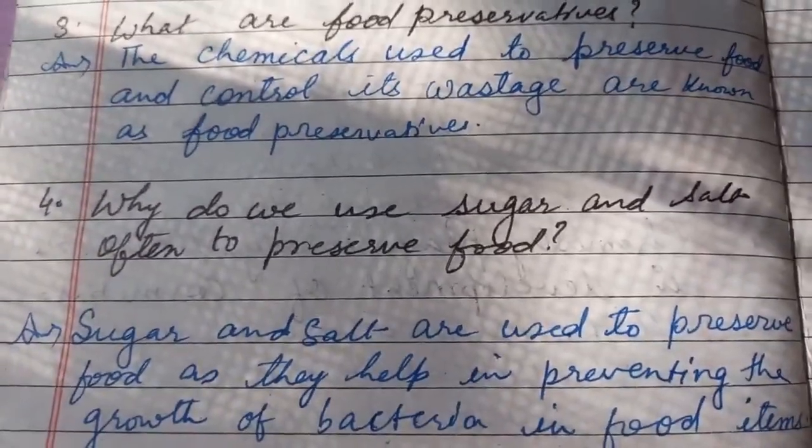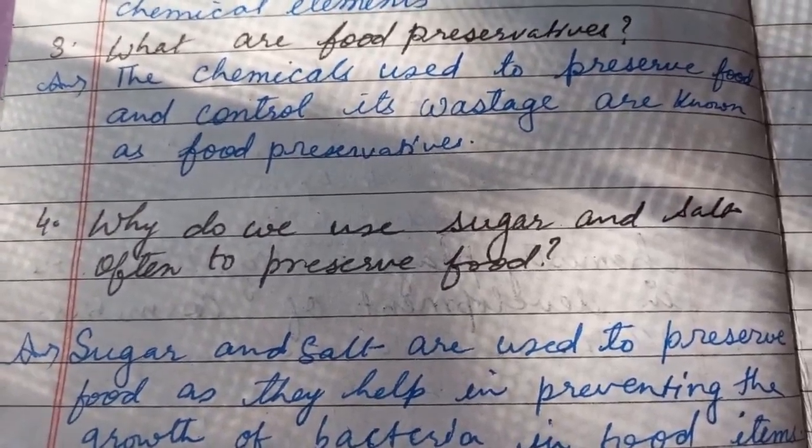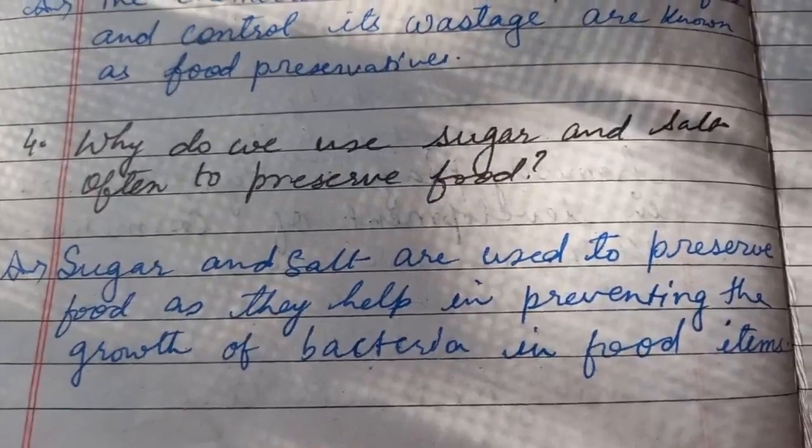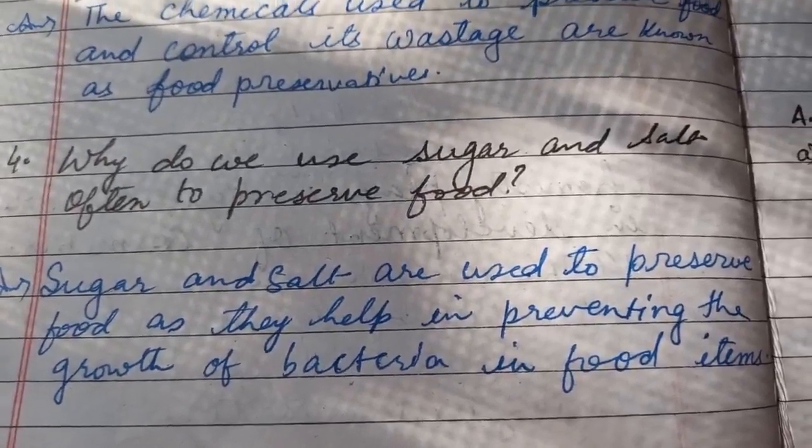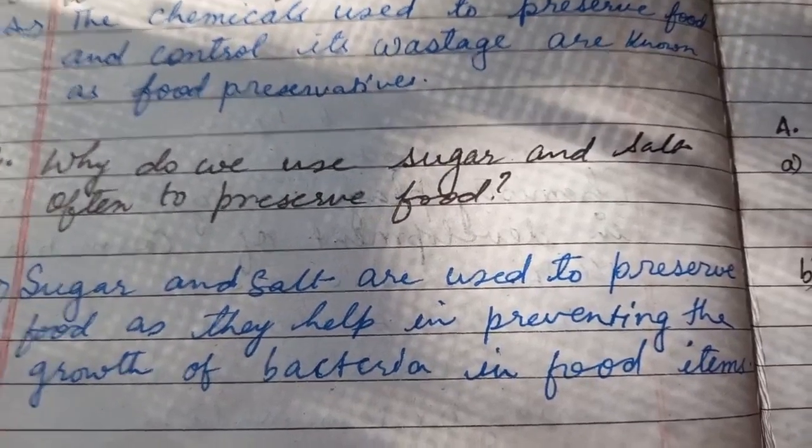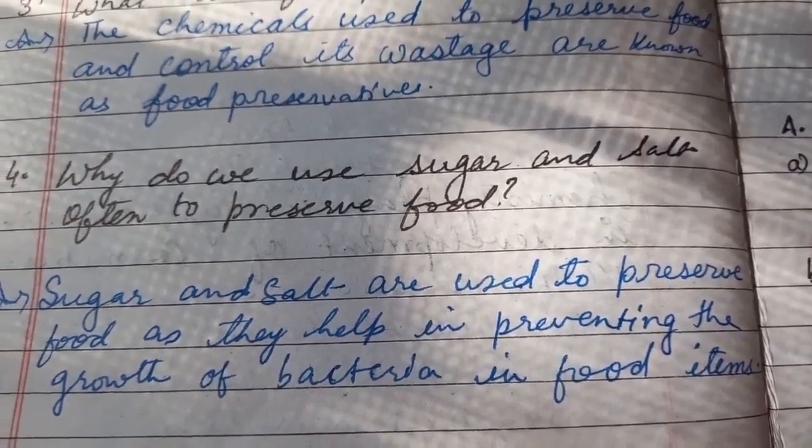Fourth number question: Why do we use sugar and salt often to preserve food? You will write the answer: sugar and salt are used to preserve food as they help in preventing the growth of bacteria in food items.